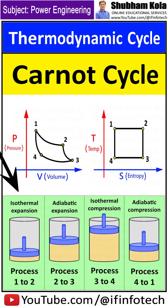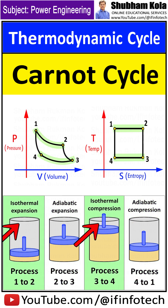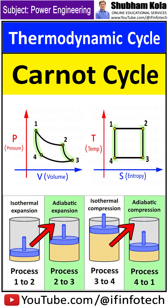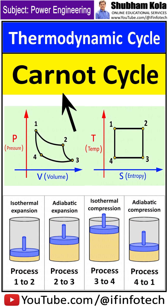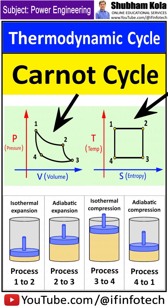These four processes make a power cycle. However, alternating adiabatic and isothermal processes is not possible in practice, because an isothermal process needs very slow movement whereas an adiabatic process needs very fast movement. Due to this, a Carnot heat engine does not exist in practice. In the Carnot cycle, all the processes are reversible, which is also not possible in practice.